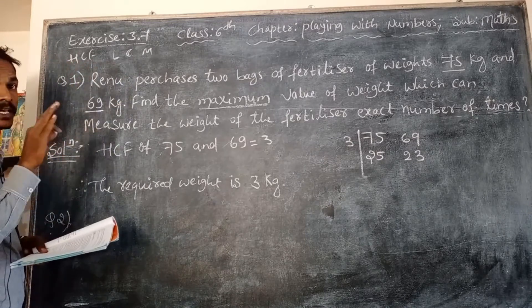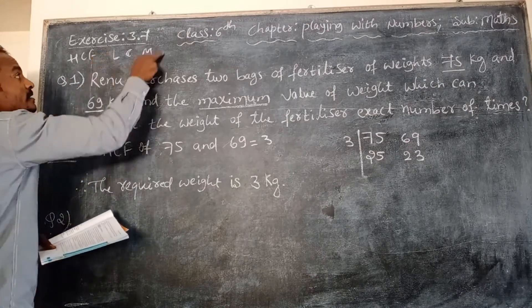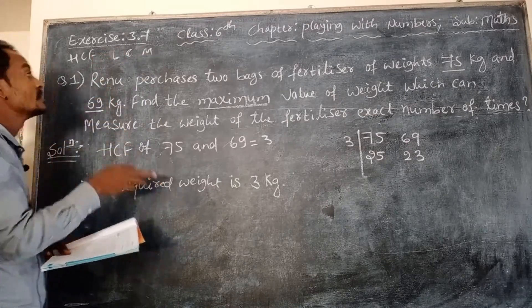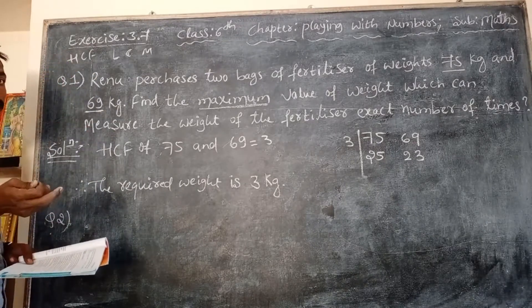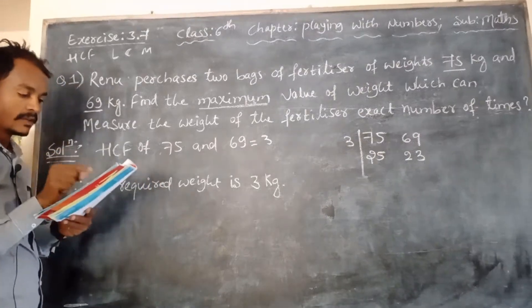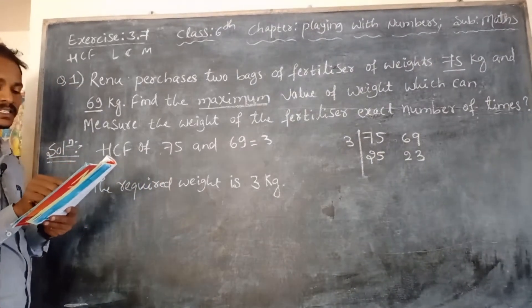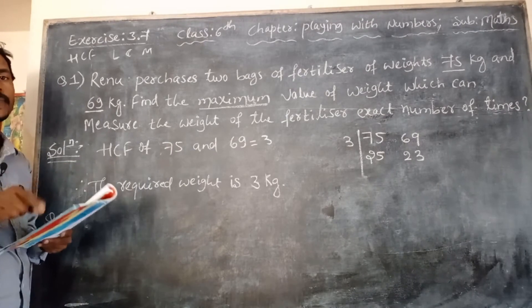In that problem, the word minimum is there. Just you have to find the LCM of the given numbers. In that problem, maximum is there, just you have to find the HCF of that given numbers. Then second problem: what is the minimum distance each should cover so that all can cover the distance in complete steps?